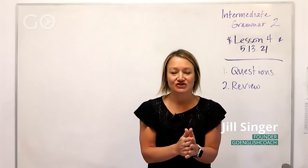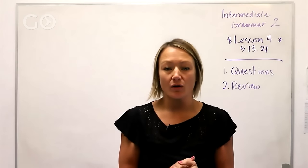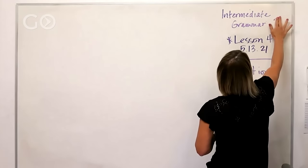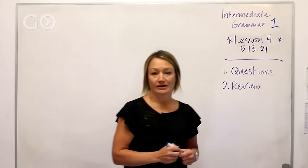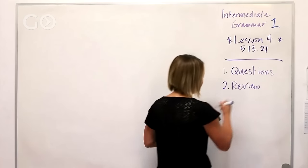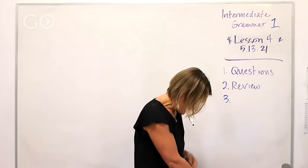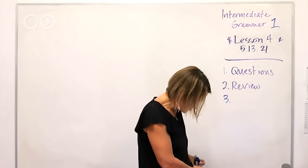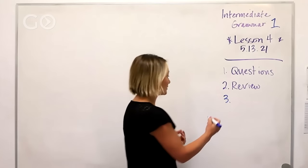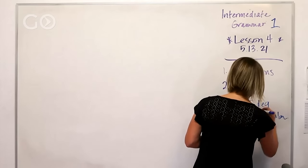Hi, welcome back. It's Jill with Go English Coach. Today I'm excited to talk to you about our intermediate grammar class, Level 1. We are halfway through our first class. Last week we covered present tense and present progressive, and this week we're going to look at the past tense of regular verbs, irregular verbs, and the past tense of 'to be.'